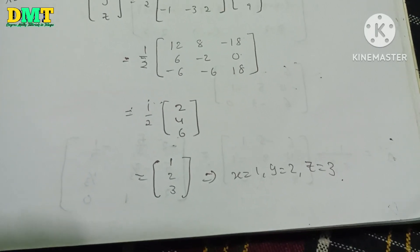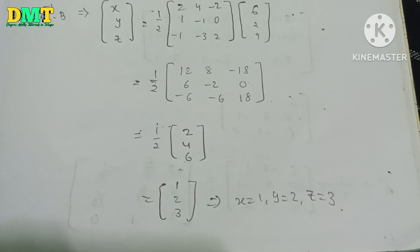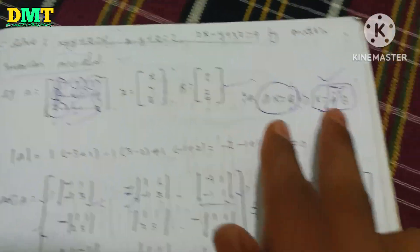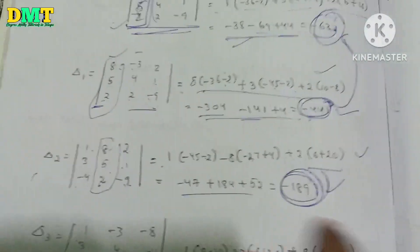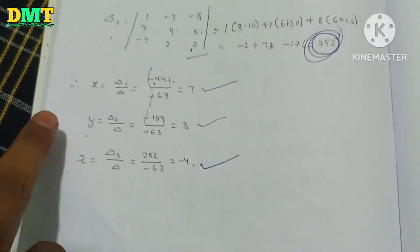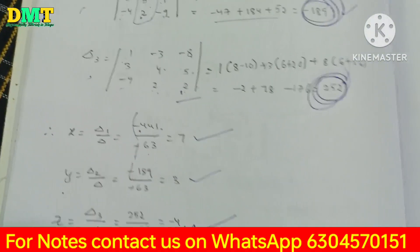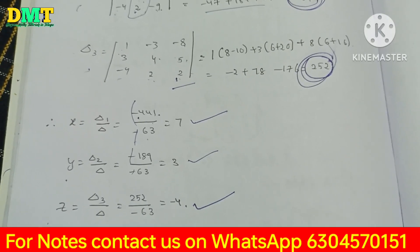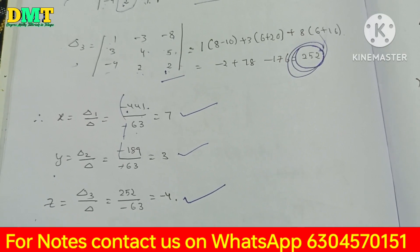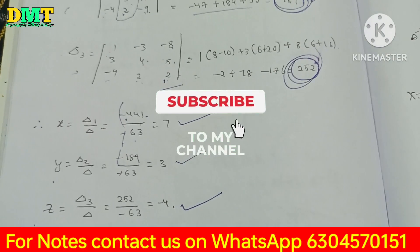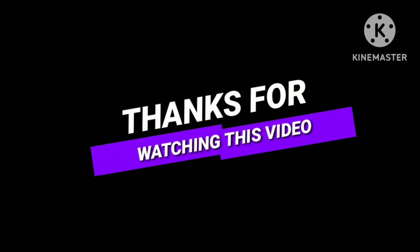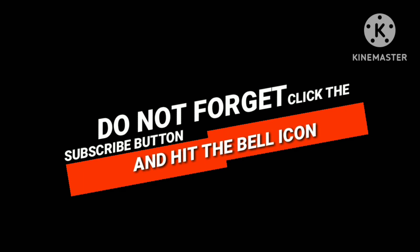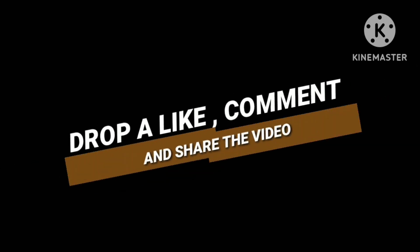If you want to do this method, go through Cramer's Rule. You have to do the Matrix Inversion Method: find A inverse, find B, then multiply. Kramer's Rule uses D1, D2, D3 over delta to find X, Y, Z. This is a very easy question. You can find many videos on this channel. Please like, subscribe, and click the bell icon. If you want notes, send us a WhatsApp message. Thank you, see you next time.